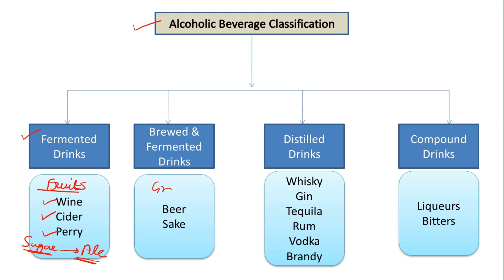The next category is brewed and fermented. These use grains — beer is made from barley, rye, or wheat, and sake is made from rice. These grains don't have sugar readily available, so first you have to convert the starch into sugar. You brew first — this brewing converts the starch into maltose, which is a fermentable sugar — and then it is fermented into alcohol. So there are two processes: first brewed, then fermented.